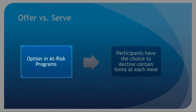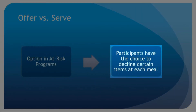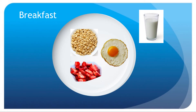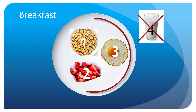Offer versus serve is an option in at-risk programs, meaning enrolled participants have the choice to decline certain foods at each meal. At breakfast, three required components plus one additional creditable food item must be offered, for a total of four different food items. One item may be declined, meaning the participant must take three items.